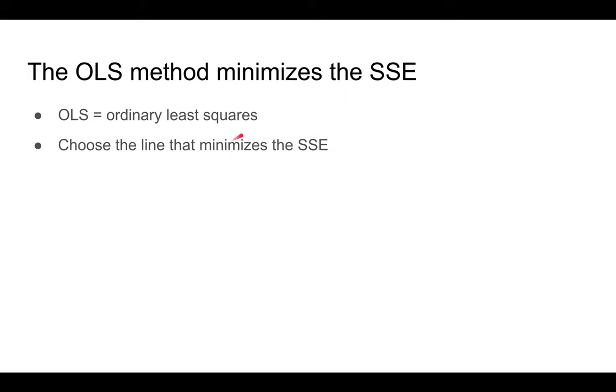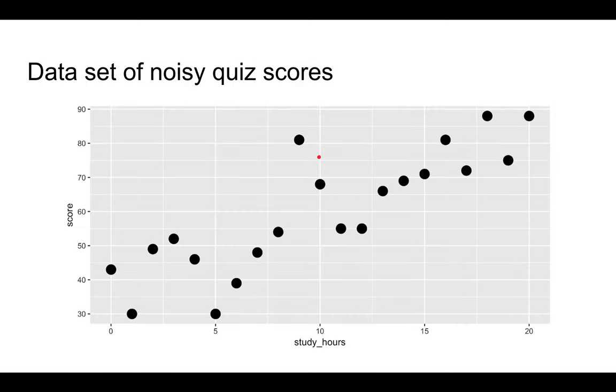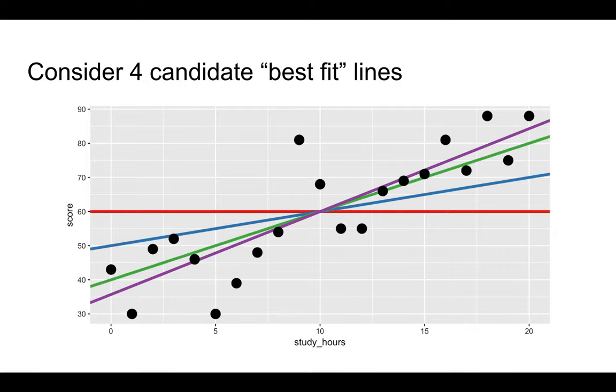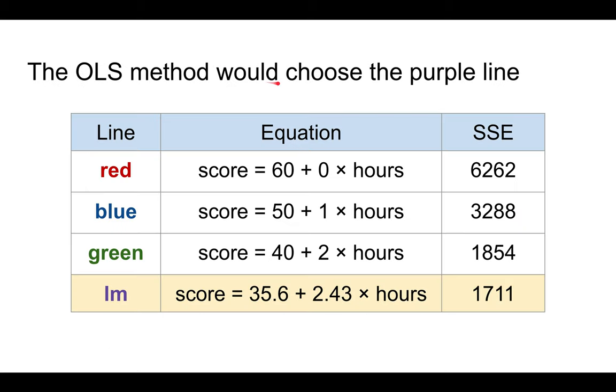There's a method called ordinary least squares, which is one linear regression method, and this method chooses the line that minimizes the sum of squared errors. Going back to our data set of the noisy quiz scores, here are four candidate best fit lines. Is it obvious which line is best? Not really, I think. But we can calculate the sum of squared errors for each of these lines, and what you find is that the purple line has the smallest sum of squared errors, and therefore it is the method that would be chosen by ordinary least squares. This is actually the output of a linear regression, so it's not possible to find another line with a smaller sum of squared errors.